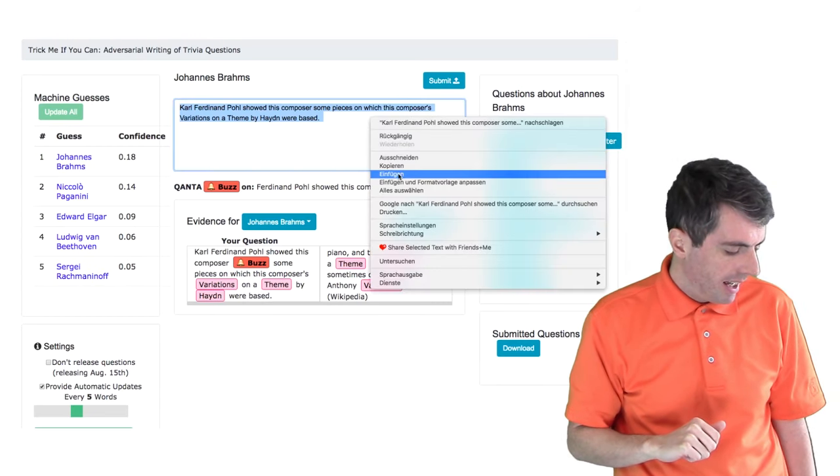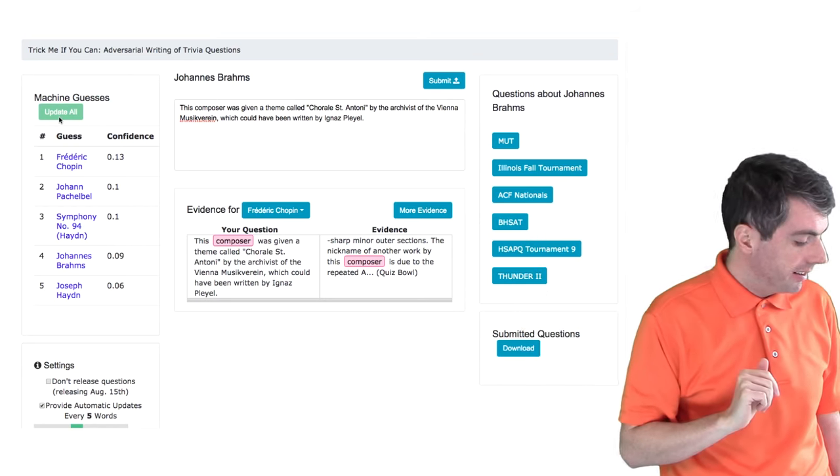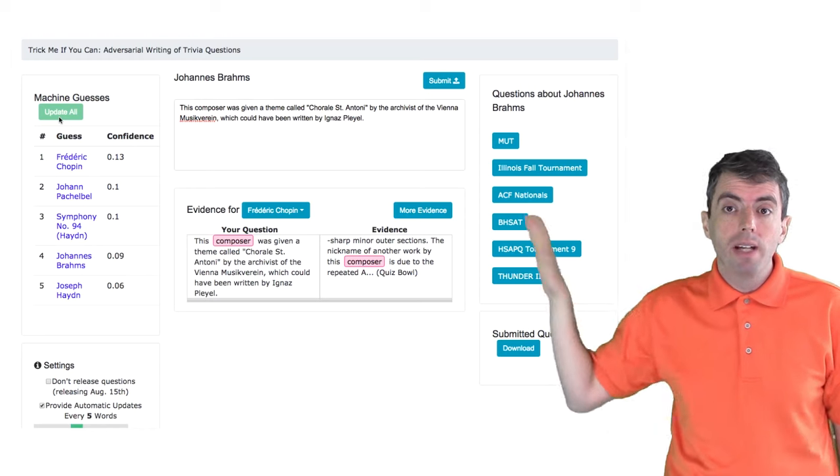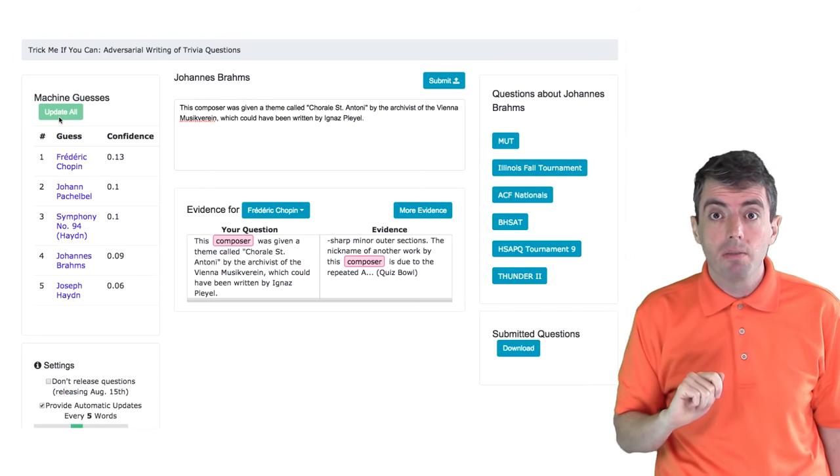So let's try to fix that. So now the system doesn't know that this is Johannes Brahms. It thinks that it's Frédéric Chopin. So we've managed to create a clue that basically has the same information but is challenging for the computer to answer.